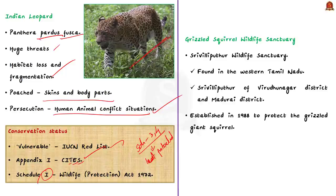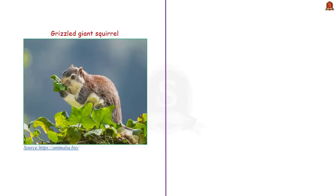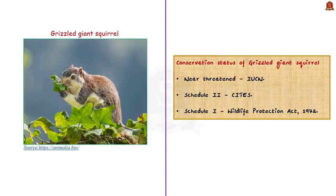The Grizzled Squirrel Wildlife Sanctuary, also known as Srivalliputur Wildlife Sanctuary, is located in western Tamil Nadu, mostly in the districts of Virudhunagar and Madurai. It was established in 1988 specifically to protect the grizzled giant squirrel. The grizzled giant squirrel has been categorized as near threatened by IUCN due to habitat loss, poaching, and human intervention. It is listed under Schedule 2 of CITES and protected under Schedule 1 of the Wildlife Protection Act of 1972 in India.